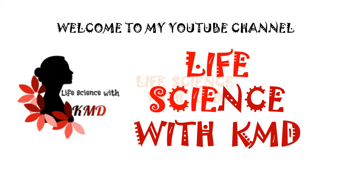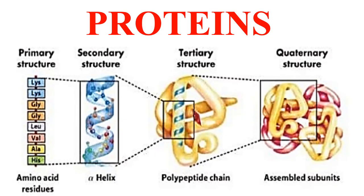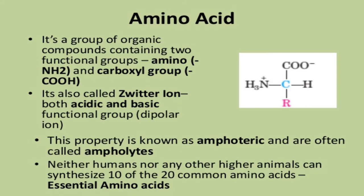Welcome to Life Science with KMD. Today I'm going to explain about proteins. First, we will know about amino acids. It is a group of organic compounds containing two functional groups: one is amino and another one is carboxyl group. It is also called as zwitterion because it has both acidic and basic properties.